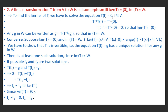First we find the kernel of T. We solve T(f) = 0 for f ∈ V, since ker(T) = {x ∈ V : T(x) = 0}. Applying T⁻¹ to both sides: T⁻¹(T(f)) = T⁻¹(0). Since T⁻¹T is the identity transformation, f = 0. Therefore ker(T) = {0}, since f was an arbitrary element of V.